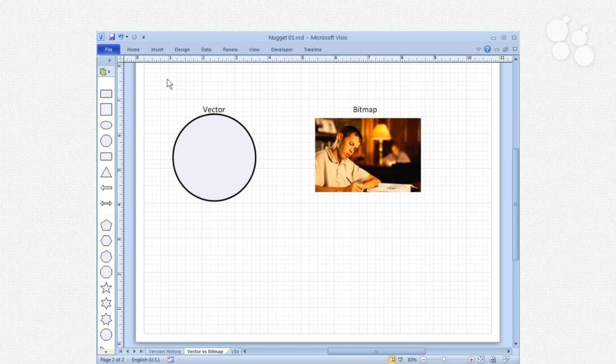I'll show you in an upcoming nugget how we can show and hide the ribbon and tuck the shapes window off to the side, but the purpose of this simple drawing is to show you the difference between vector graphics and bitmap graphics.